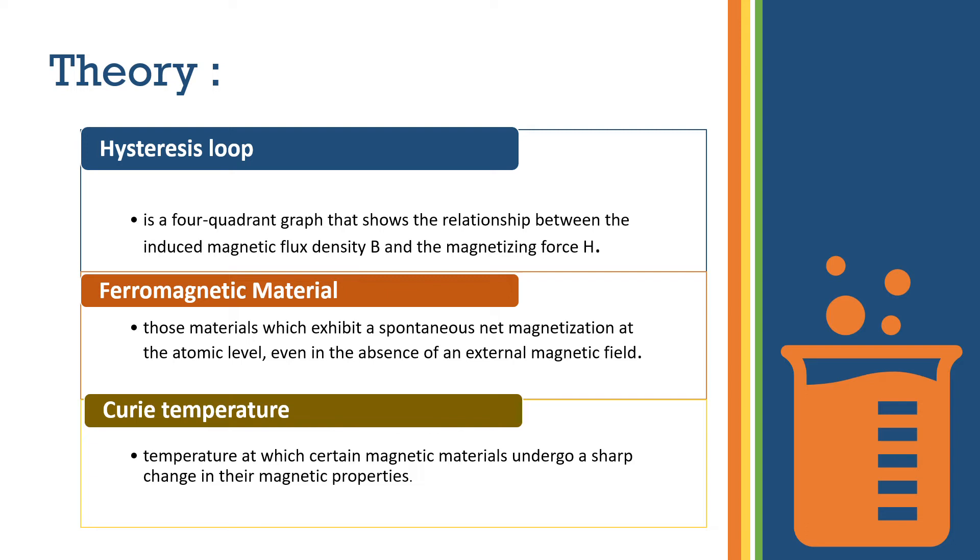What are ferromagnetic materials? Those materials which exhibit a spontaneous net magnetization at the atomic level, even in the absence of an external magnetic field. Whenever we apply a magnetic field on any substance, they perform this property, but when we remove this material from the magnetic field, the magnetic material shows the same property as in the magnetic field.